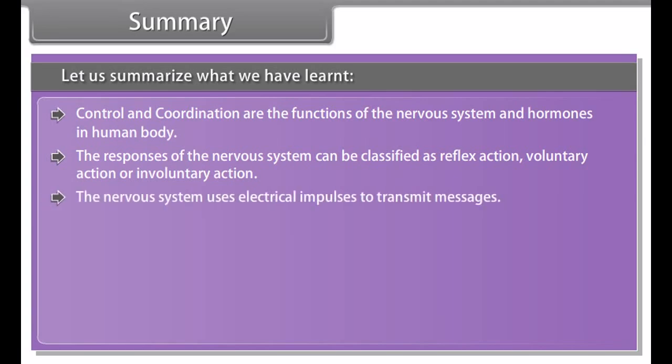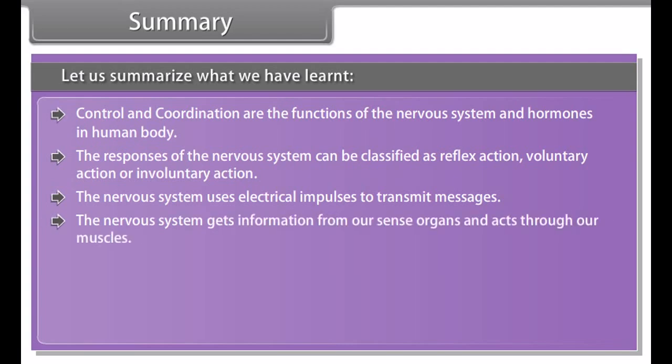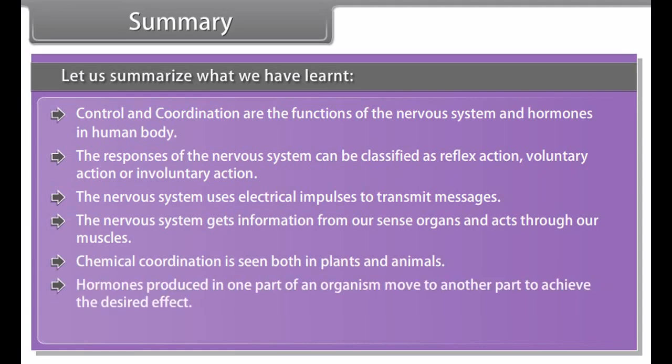When a receptor is stimulated, it sends a signal to the central nervous system where the brain coordinates the response. But sometimes a very quick response is needed — one that does not need the involvement of the brain. This is a reflex action. Reflex actions are rapid and happen without us thinking. For example, you would pull your hand away from a hot flame without thinking. A receptor detects the stimulus, a sensory neuron sends a signal to the relay neuron, the relay neuron sends the signal to the motor neuron, the motor neuron sends a signal to the effector, and the effector produces a response — the hand is pulled away quickly.